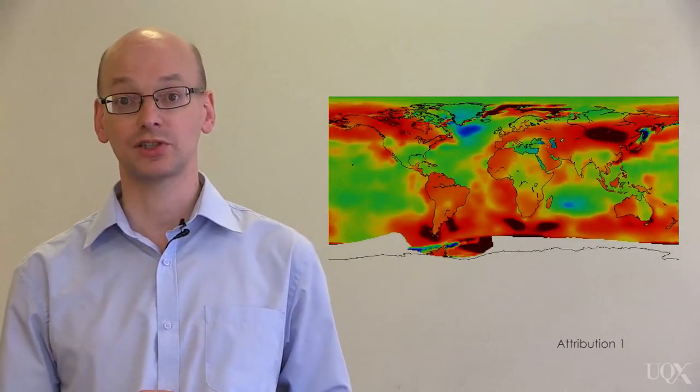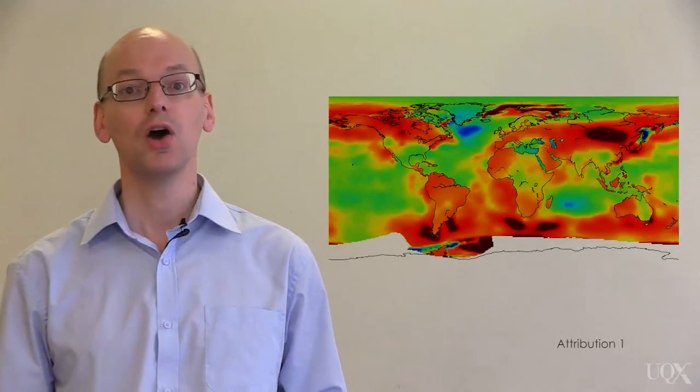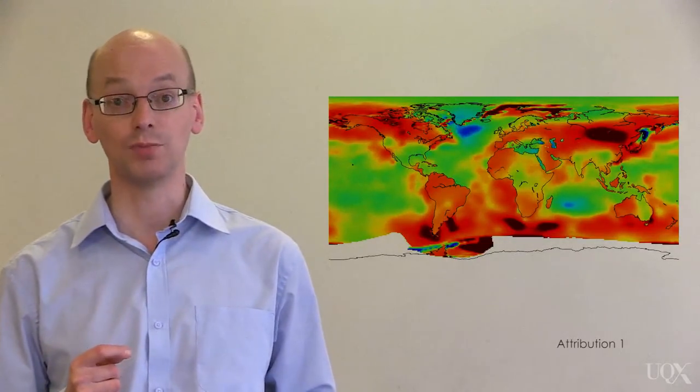As an initial check, let's look at a map of global temperature trend of the 20th century from the Berkeley Earth project. Red areas are warming, and blue areas cooling. We can see that some areas have warmed more than others.